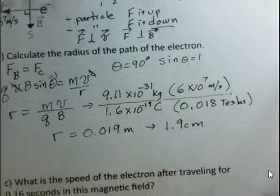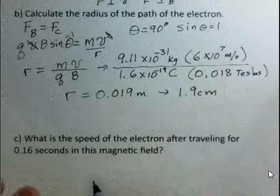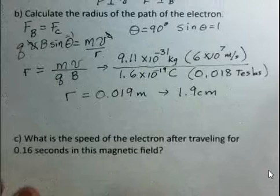Okay, part C. This was the speed, 6 times 10 to the 7th at time equals zero. What's the speed of the electron after it travels for 0.16 seconds in this magnetic field? It's going to go quite a distance. And again, assume it doesn't hit anything. What's the speed of the electron?